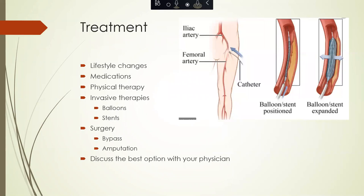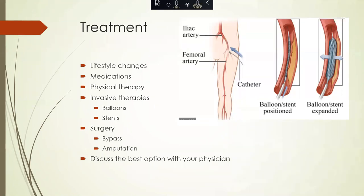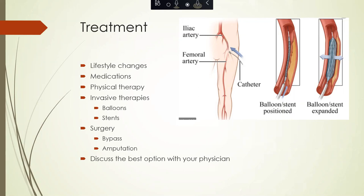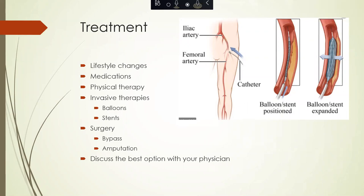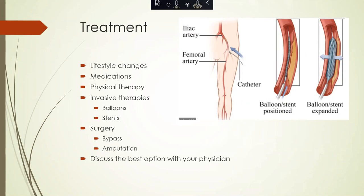Once PAD is diagnosed, there are several treatment options. Starting with non-invasive and conservative approaches: lifestyle changes including diet, exercise, weight control, blood pressure control, diabetes and cholesterol management, and stopping smoking. There are medications that may be prescribed to help blood flow. Physical therapy is often utilized as a structured walking program to help improve blood flow and symptoms. Invasive therapies utilizing balloons and stents are next, and lastly a surgical option with a vascular surgeon, which may require bypass surgery or amputation if symptoms are severe.